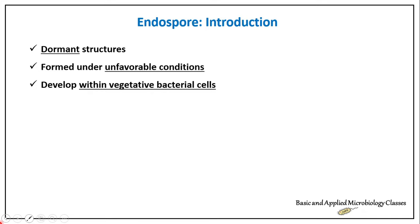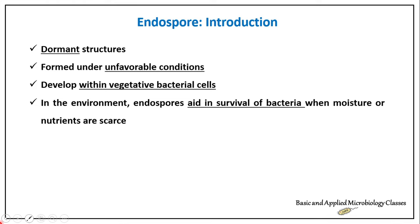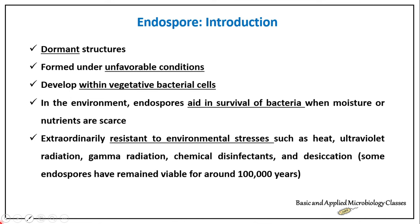Development of the endospore always takes place inside the vegetative cell. Endospores help bacteria survive under unfavorable conditions like scarce moisture and nutrients. The term 'endospore' is used specifically for bacterial spores. They are extremely resistant to environmental stresses such as heat, ultraviolet radiation, gamma radiation, chemical disinfectants, and desiccation.